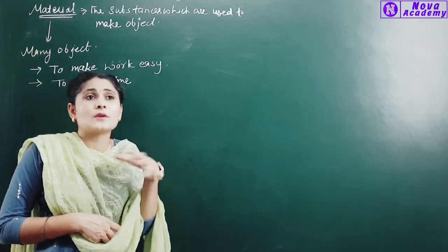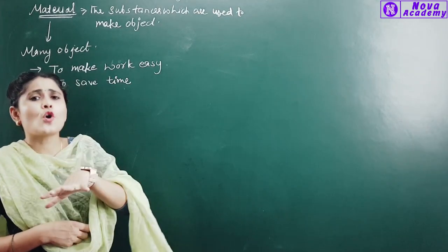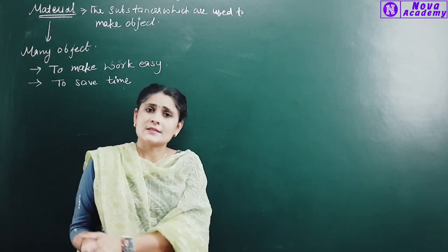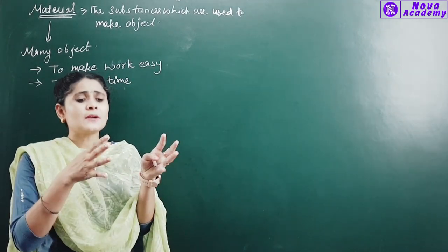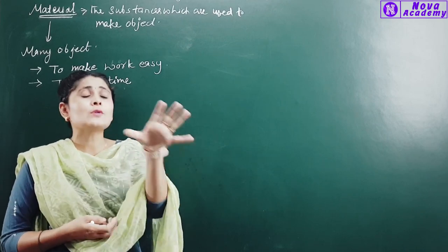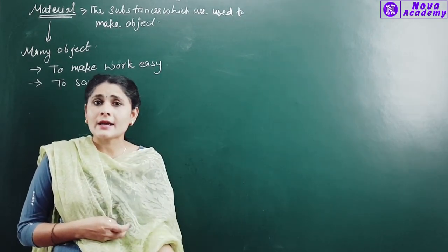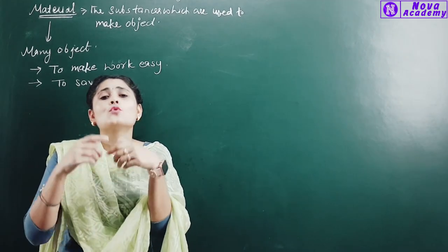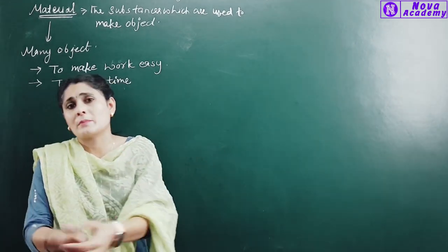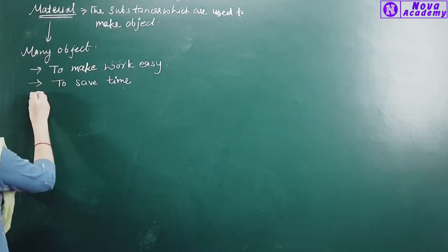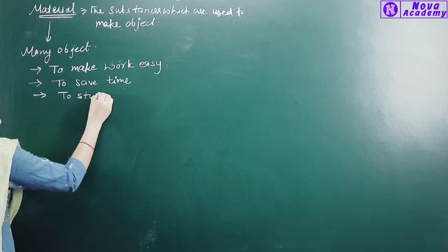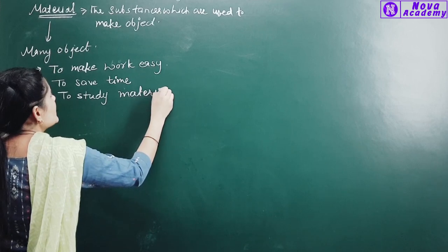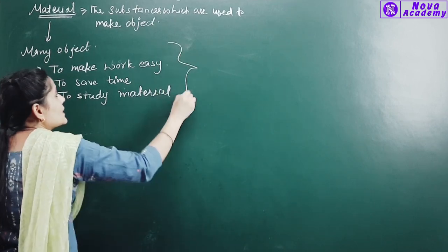Metals are lustrous, shiny — we have made jewelry from them. Other materials are dull and brittle, used for different purposes. If we sort out materials, then we can easily study them. If we know their properties, we can easily use them. To study materials, we do sorting and then classification.